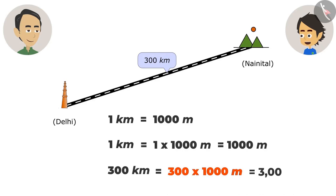Yes. Then how many meters is it? On multiplying 300 by 1,000, the answer is 3 lakh meters. It means we will go 3 lakh meters away!